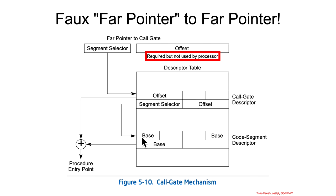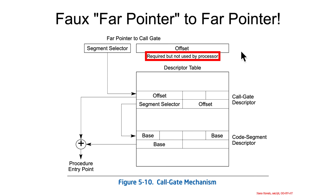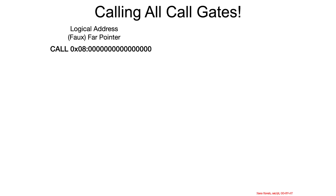This far pointer in the call gate is then selecting a different thing from within the GDT or LDT — it would point at a code segment descriptor with a base and a limit. But in 64-bit mode, we don't care about either of those. So you take the base of 0 from the code segment, add the offset baked into the call gate, and that's how you find the actual address where the code to be run is located.